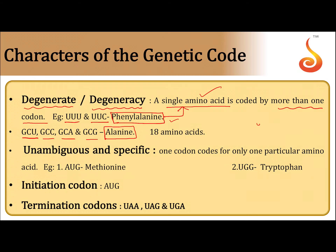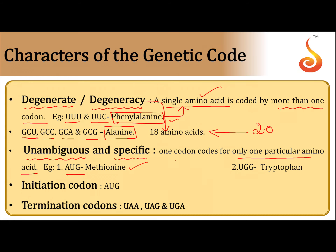The total number of amino acids is 20, and out of 20, eighteen amino acids show degeneracy. The genetic code is also unambiguous and specific — one codon codes for only one particular amino acid. For example, AUG codes for methionine, and UGG codes for tryptophan amino acid.